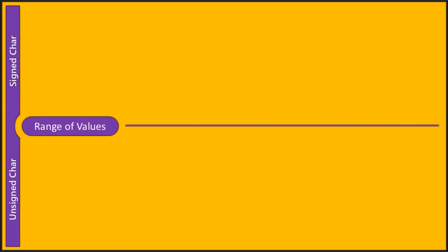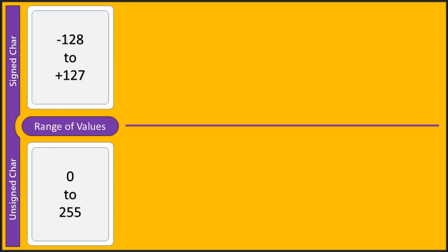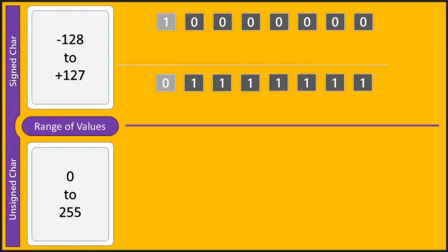The range of values: signed character ranges from -128 to +127, whereas unsigned character ranges from 0 to 255. For signed character, the most significant bit is used as the sign bit — when it is 1 it indicates a negative value, and when it is 0 it indicates a positive value. Negative values are always represented using 2's complement form, so -128 is also in 2's complement form.